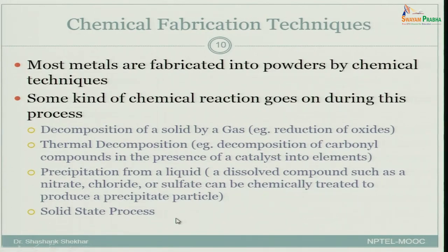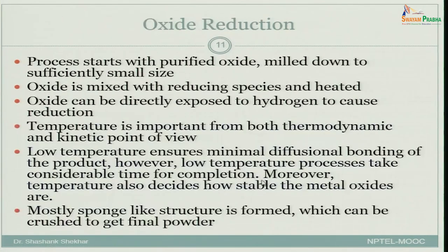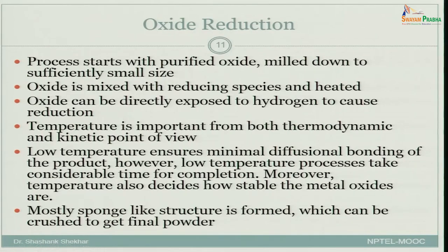You can also have solid state processes where the reaction takes place entirely in the solid state with no liquid involved. Let us look at the oxide reduction process. This process starts with a purified oxide milled down to a sufficiently small size. The oxide is mixed with a reducing species — for example, to get pure iron you start with pure iron oxide and reduce it using hydrogen to obtain powder-sized iron.